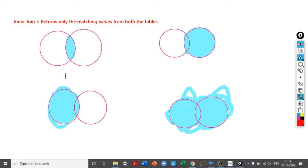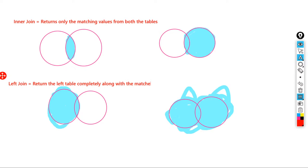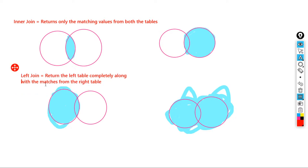Left join returns the complete left table. It also tries to see what values are commonly present in the right table along with the matches. A left join simply returns the entire content from the left table as well as values from the right table that are matching in the left table.